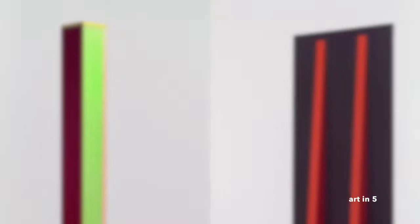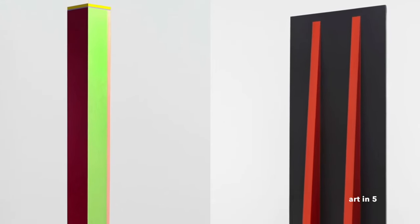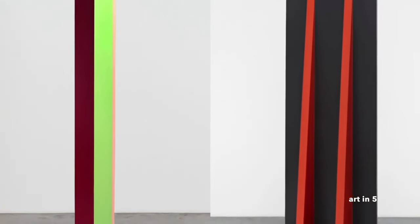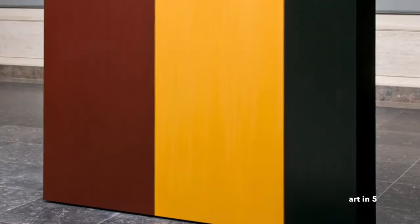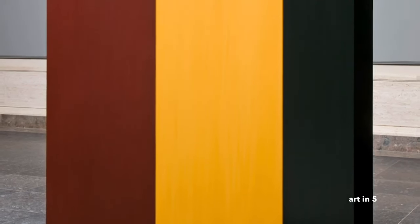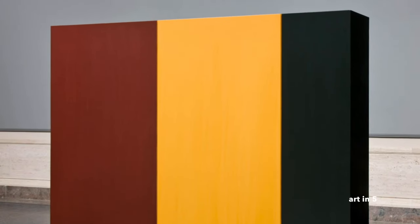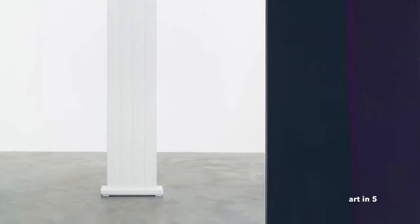Truitt believed that the verticality of her sculptures evoked a sense of human presence and created a dialogue between the viewer and the artwork. Throughout her career, Truitt's work underwent a gradual evolution. While her early sculptures were characterized by their smooth and polished surfaces, her later works featured more textured and weathered finishes. This shift reflected her exploration of the passage of time and the imperfections that come with it. Truitt's artistic practice was deeply influenced by her personal experiences and reflections, drawing inspiration from her own memories, emotions, and observations of the natural world. Her work also reflects her interest in spirituality and the transcendental, as she sought to create art that resonated with a sense of inner harmony and contemplation.